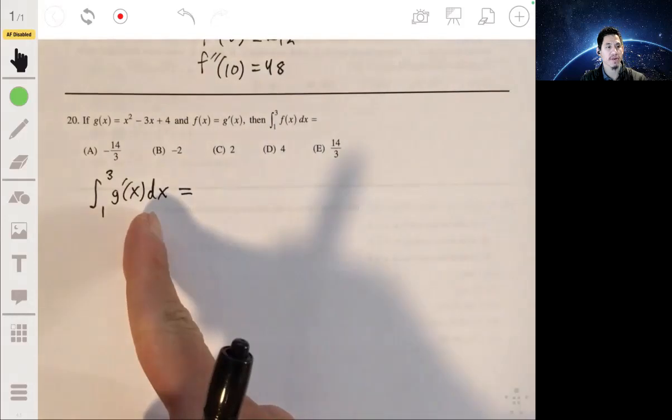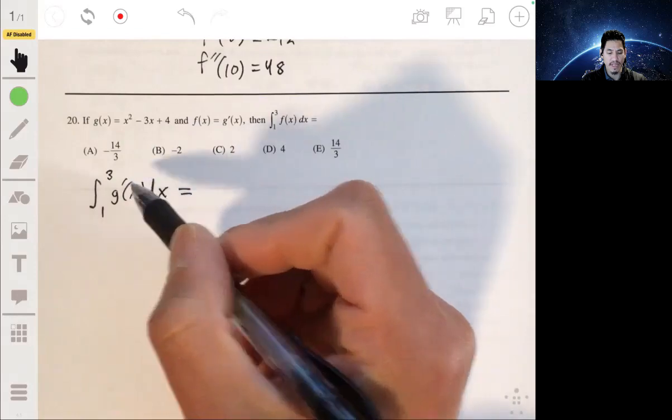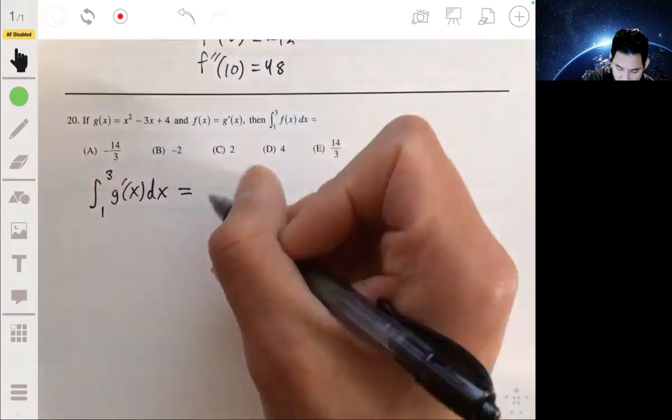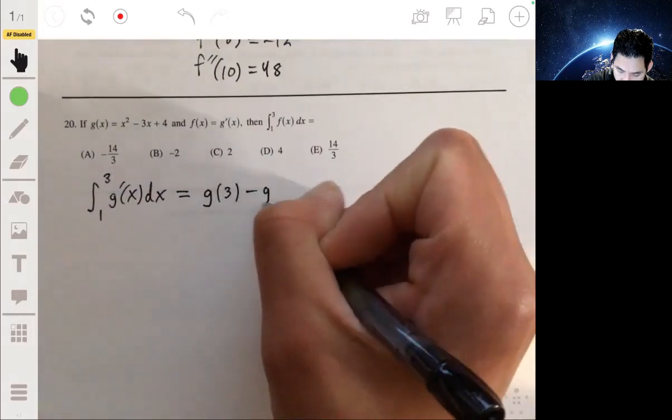Because if you integrate this, you then get the antiderivative of g prime of x, which is g of x. And using the fundamental theorem of calculus, this would be g of 3 minus g of 1.